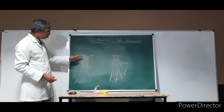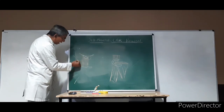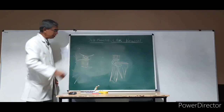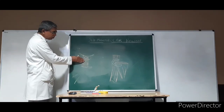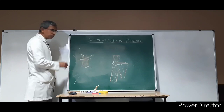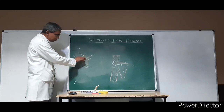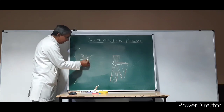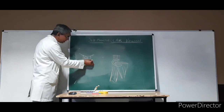It is related superiorly to the deep part. Inferiorly it is related to the hypoglossal nerve here. This hypoglossal nerve passes superficial to the hyoglossus muscle, and inferior to the deep part of this gland. The hypoglossal nerve supplies the muscles of the tongue.